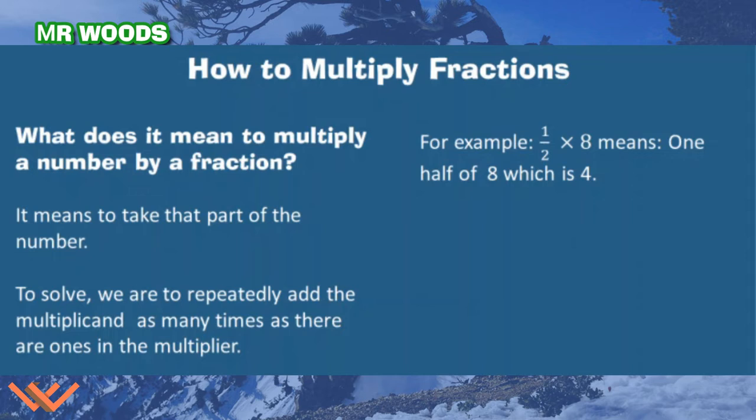We can solve this by repeatedly adding the multiplicand as many times as there are ones in the multiplier. What does that mean? Well, let's set it up. So we have, for example, one half times eight means one half of eight, which is four. So you're like, whoa, wait a minute. What did you do Mr. Woods? It sounds like it's division. Well, actually this is a form of division, but we use multiplication signs and such.